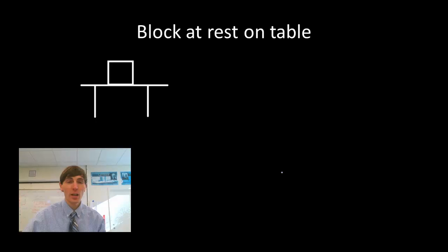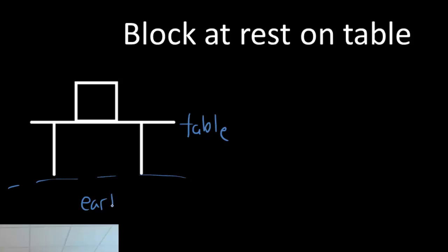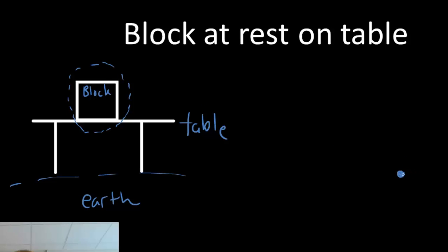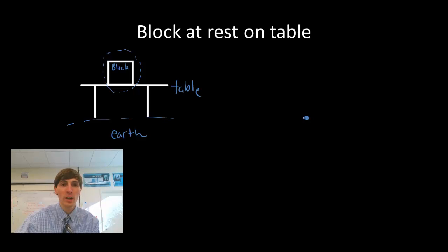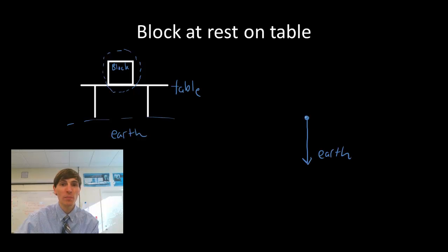Let's look at another example: a block at rest on a table. Here's my table, down here is my earth, and we have our block. I want to draw a force diagram for it. I notice that touching the block is the table, and the reason the block is not continuing to move toward the earth is that the table is in its way. So the earth is still pulling, but that table is there pushing back on the block — just as much as the earth is pulling it.